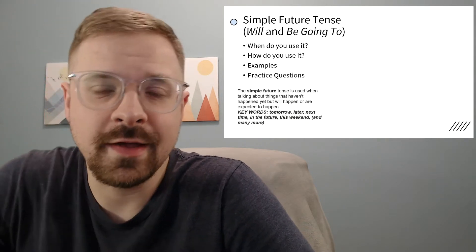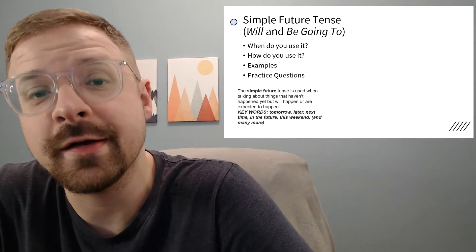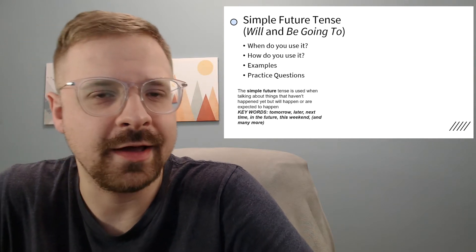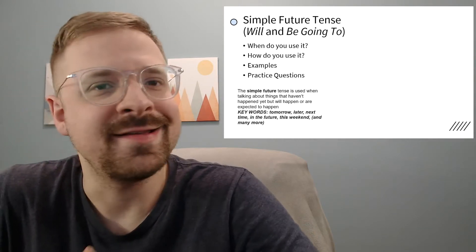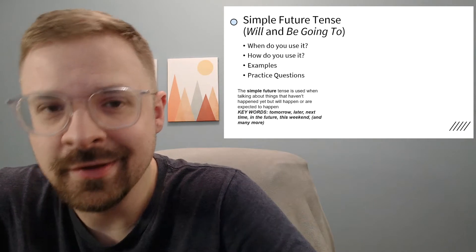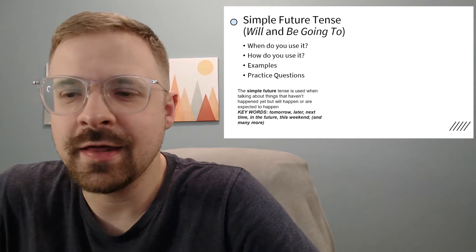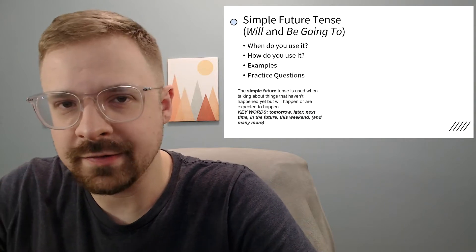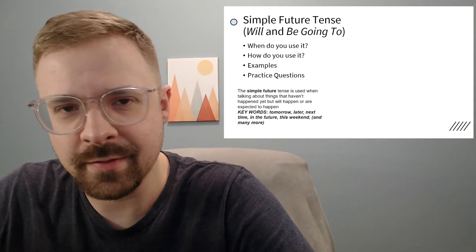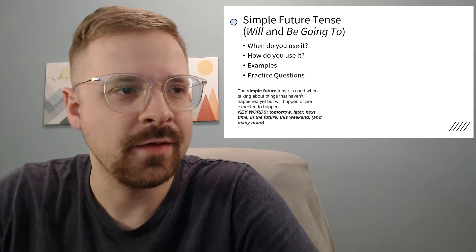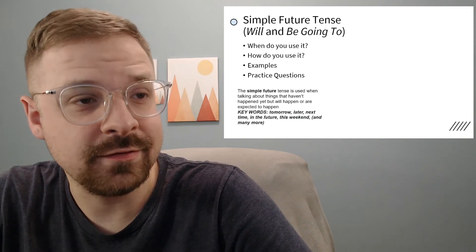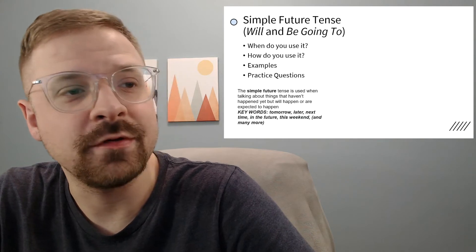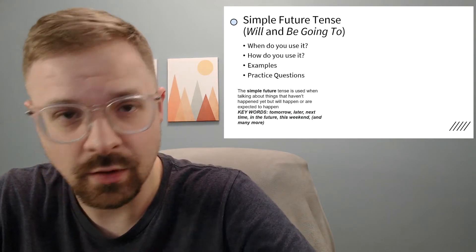This tense is basically used whenever you're talking about something that is happening in the future. When we say in the future, we're looking at words like tomorrow, next week, next month, later - things that have not happened yet or before now but are going to happen maybe soon or sometime far off in the future. Key words include tomorrow, later, next time, in the future, this weekend, and so on.